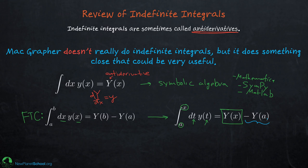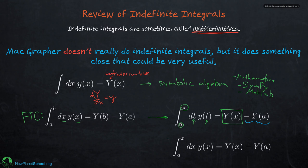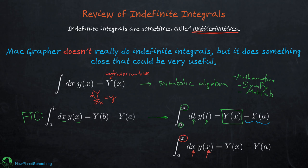MacGrapher uses a somewhat unfortunate notation for this: it places x as both the upper limit of integration and as the dummy variable inside the integral. Don't get confused — the x in the upper limit is the output variable, and the x inside is just a dummy variable. It's unfortunate notation, but that's how they set it up.